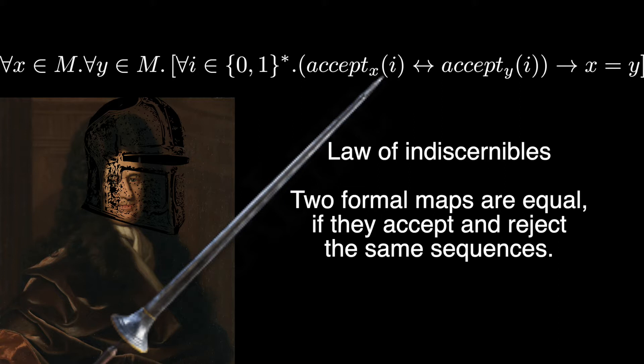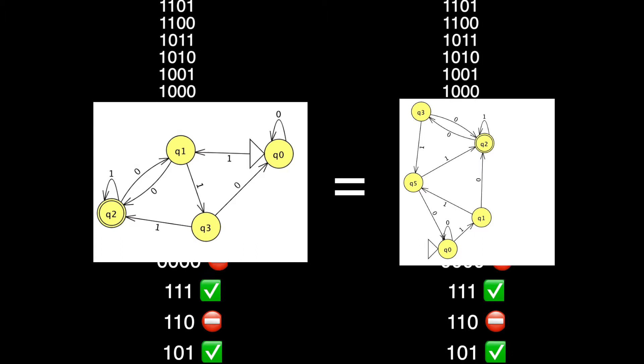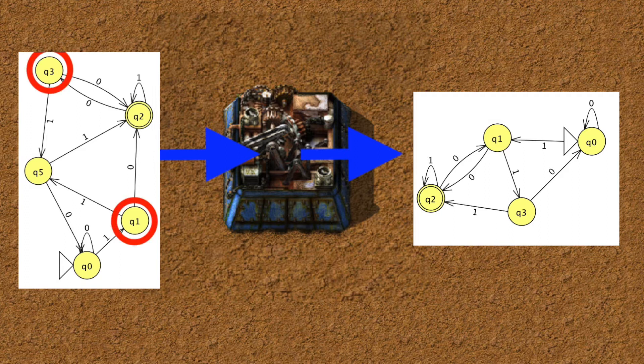And thus, two deterministic finite automata are extensionally equal if they accept and reject the same sequences, even if they look different. We of course cannot test all possible sequences, because there are an infinite number of sequences. However, thanks to an idea of Myhill and Nerode, we can try a different approach. We will try to build a machine that minimizes a deterministic finite automata by merging any two states that are indistinguishable from each other.